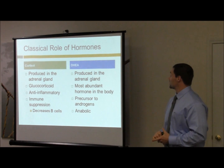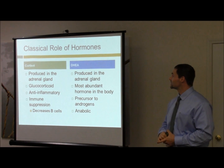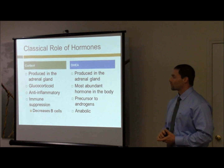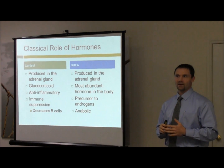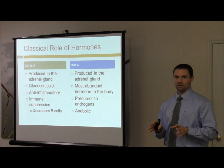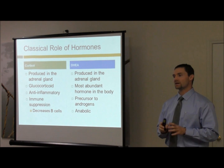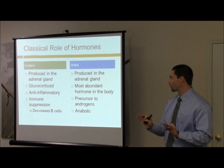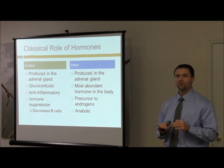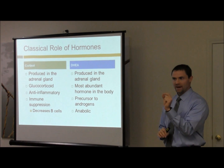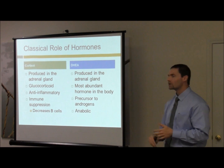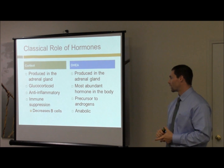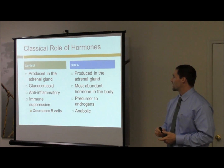Back to DHEA — it's the most abundant hormone in the body, so it must be important. The key reason I want us to focus on DHEA is that it's a precursor; it has to convert to other hormones. Those specific hormones, based on where these pathways fall out, are going to be your androgens. You can also get into your estrogens through this pathway, but primarily it's the androgens, and it's going to have an anabolic effect.